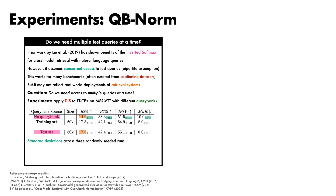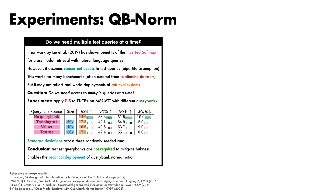The conclusion of this experiment is that test set query banks are not required to mitigate hubness. It is also possible to construct the query bank from the validation set, which also yields a boost over the no-query-bank baseline — here attaining a recall at 1 of 16.6 — but lagging the performance of training set and test set query banks due to the diminished size. This has significant implications for practical deployment of query bank normalization in cross-modal systems, since it suggests that the query bank can be constructed offline without a major penalty in performance. For the remaining experiments, query banks are constructed from the training set.